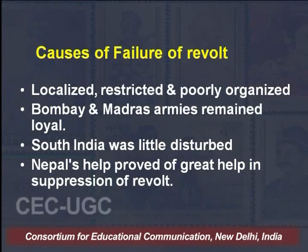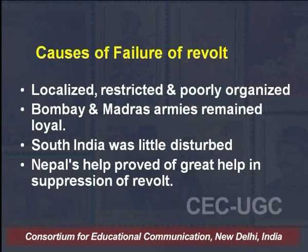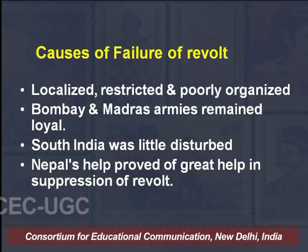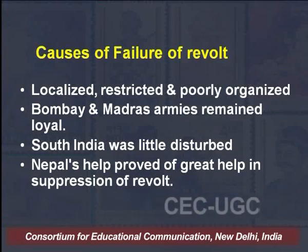If we see the causes of the failure of the revolt, it is argued that it was not organized in a proper manner. Certain sections of Indian society supported the British; many regions were not disturbed — for example, South India was not disturbed. Nepal's help proved of great use in the suppression of the revolt. The revolt had a localized presence, restricted to only certain regions. Army units like Bombay and Madras were not affected — only the Bengal army was affected. If Madras and Bombay armies, which remained loyal to the British, had supported the Bengal army, the story would have been different.